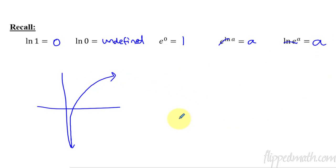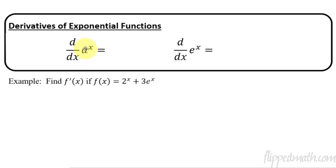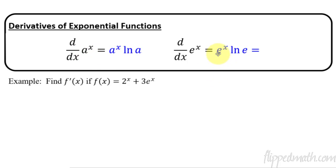The derivative of any number raised to the x is that same thing times the natural log of that number. So if I had 5 to the x, it would be 5 to the x times natural log of 5. Now if we have e, the natural number e to the x, it follows the same pattern — e to the x times the natural log of e. But the natural log of e is 1, so that cancels and it just equals e to the x. So the derivative of e to the x is just e to the x — it's itself. But if you have any other base, you have to include this natural log of a.